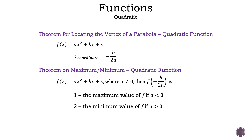Now, let's look at the two theorems that you can use to check our work. The first is the theorem of locating the vertex of a parabola — you can use negative b over 2a to find the x-coordinate of the vertex. The second theorem tells us we have a maximum if a is negative and a minimum if a is positive. To find the maximum or minimum, we substitute negative b over 2a into f of x to find the y-coordinate of the vertex.